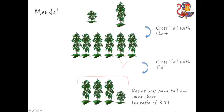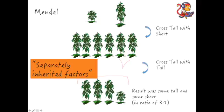So he suggested that there must be some separately inherited factors. That's what he called them at the time—separately inherited factors that were causing the plant to be either tall or short, because this short characteristic had skipped a generation.